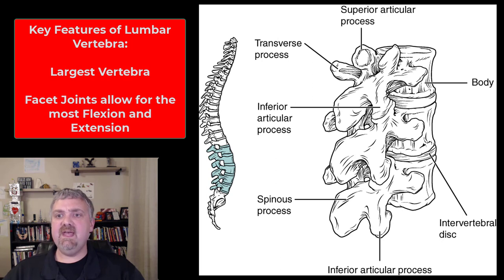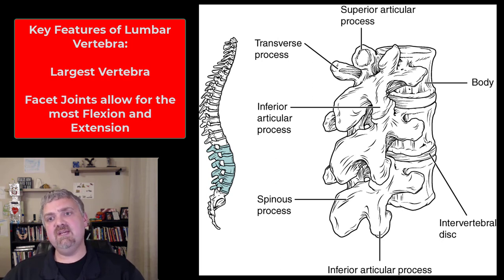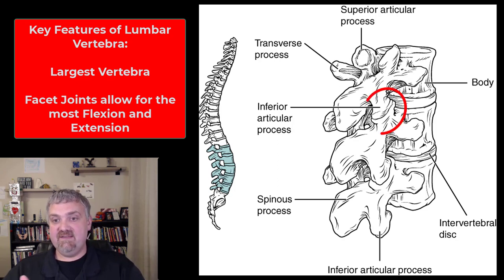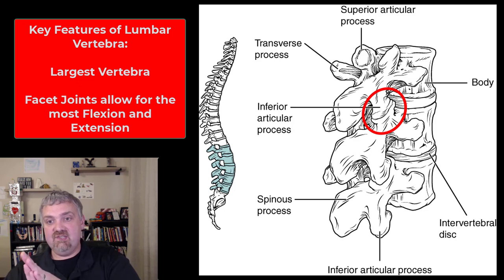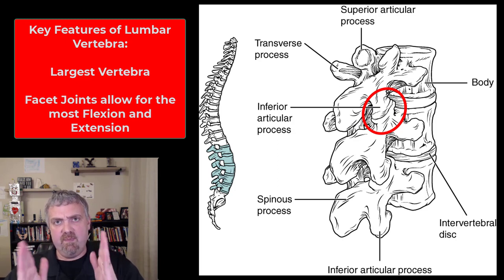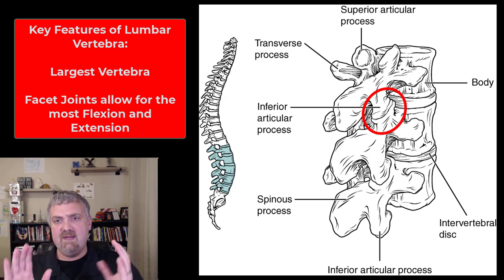Lumbar vertebrae — there are five of them. They have a larger kidney-bean-shaped vertebral body and a triangular vertebral foramen. Everything about them is big because they're supporting more weight. You can see the facet joints and how the articulating processes line up — they allow for a lot of flexion and extension. Your low back is designed for flexion and extension, whereas your cervical spine is designed for more rotation.